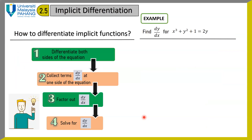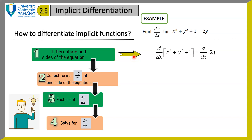Let's look at an example. Find dy/dx for x cubed plus y squared plus 1 equals 2y. In this case, y is the dependent variable and x is the independent variable. First step: we differentiate both sides of the equation with respect to x.